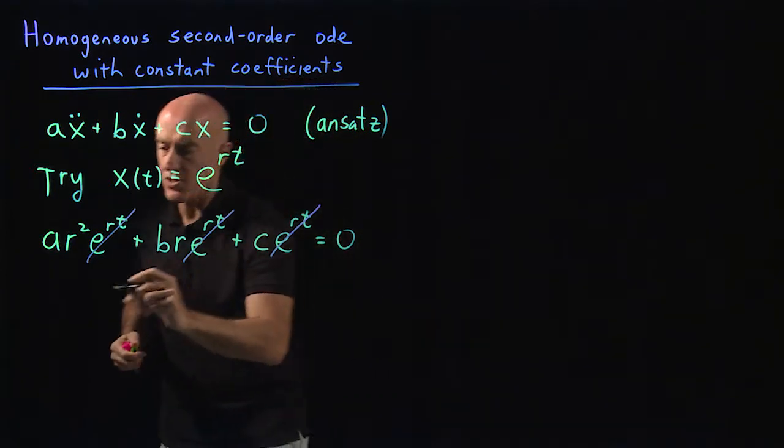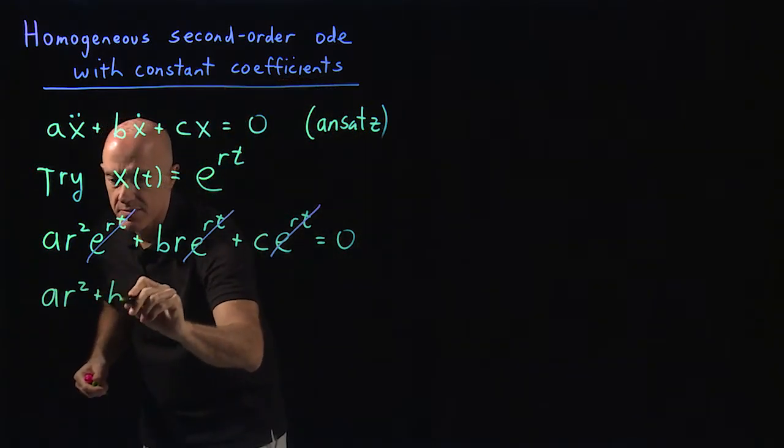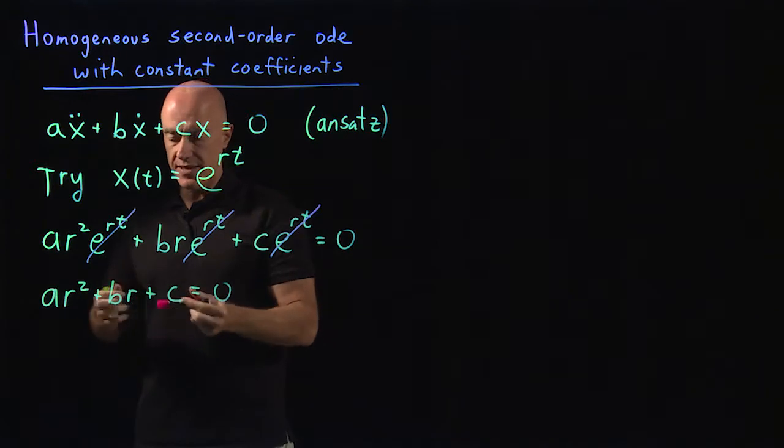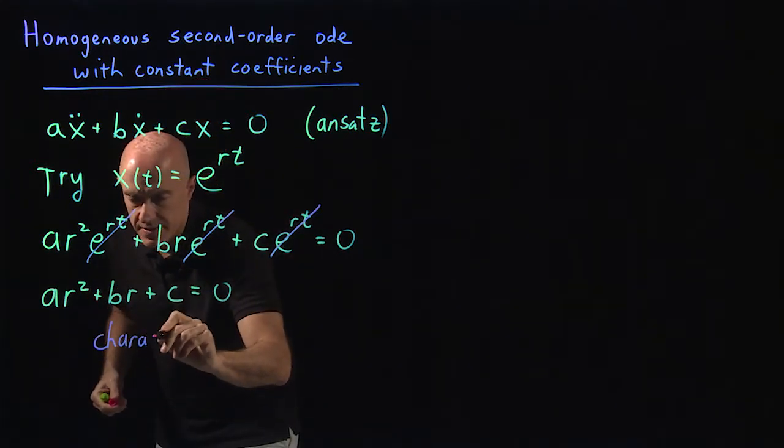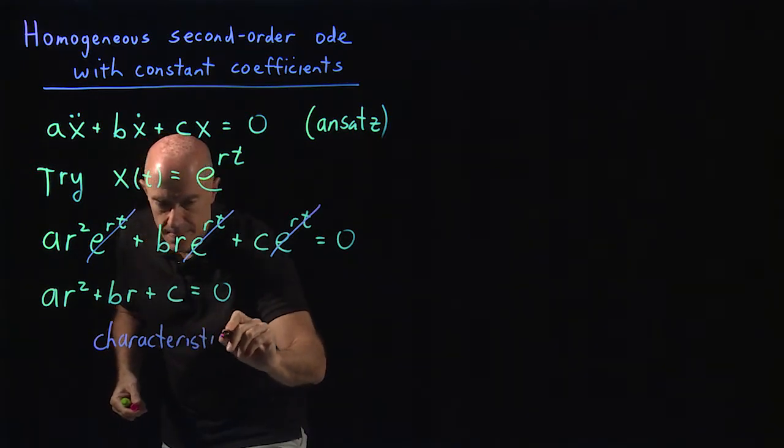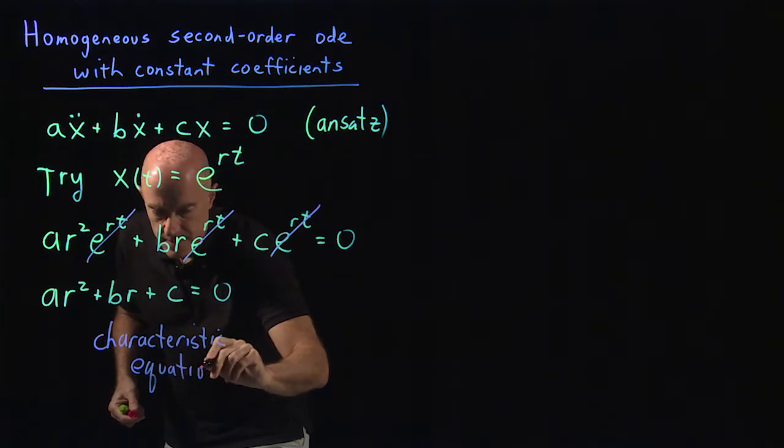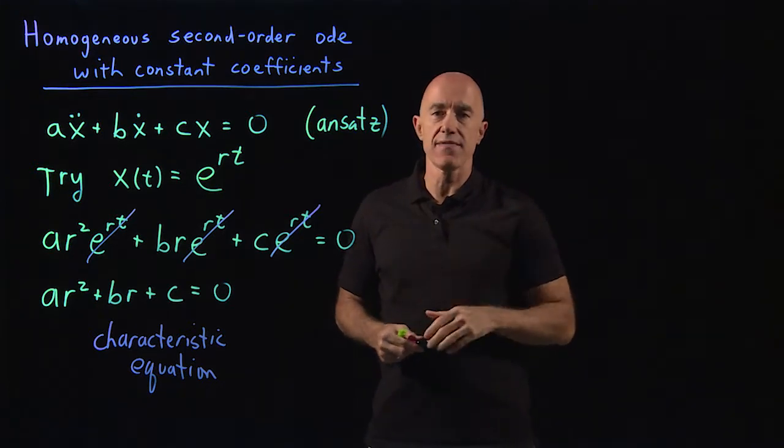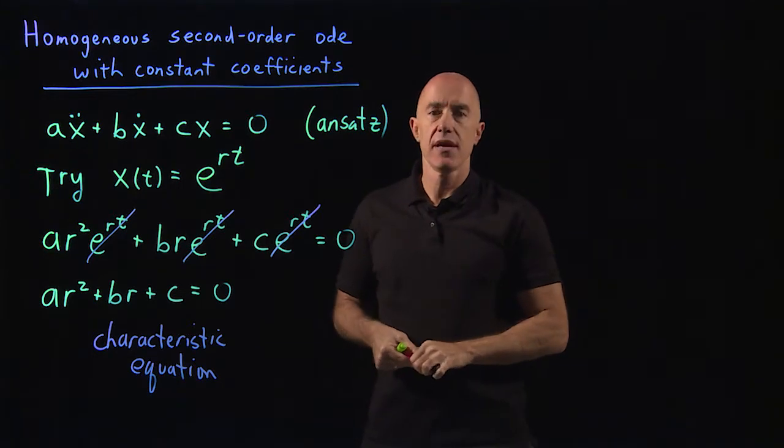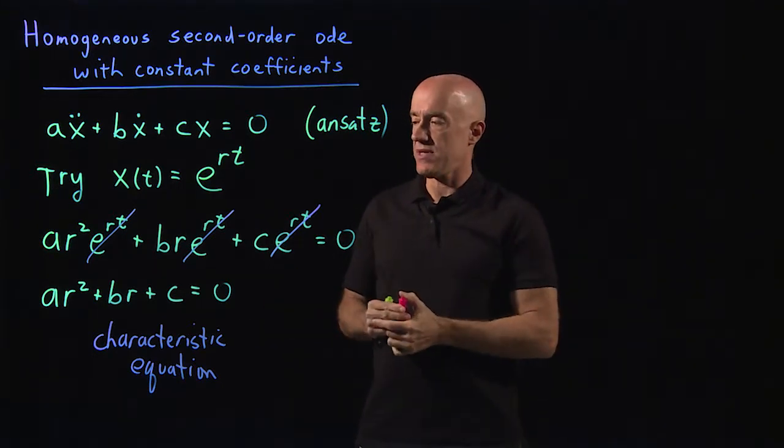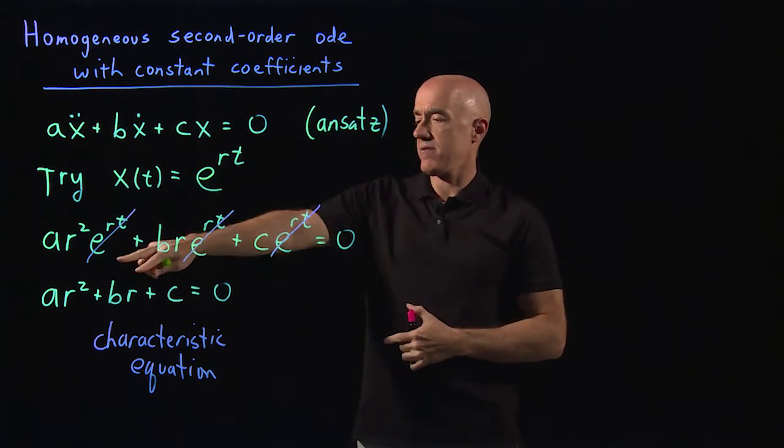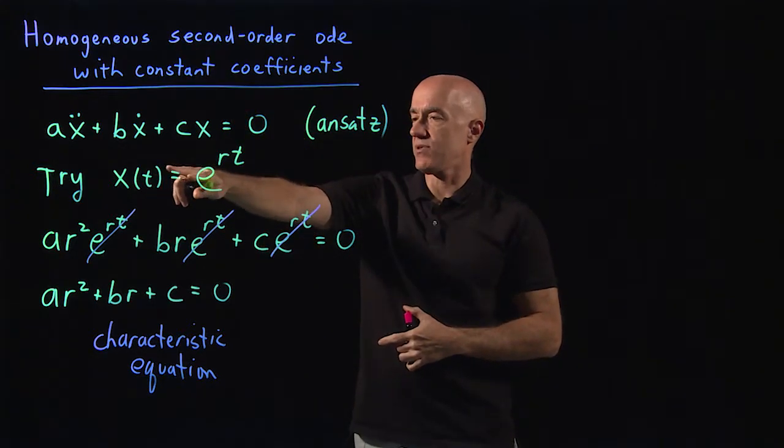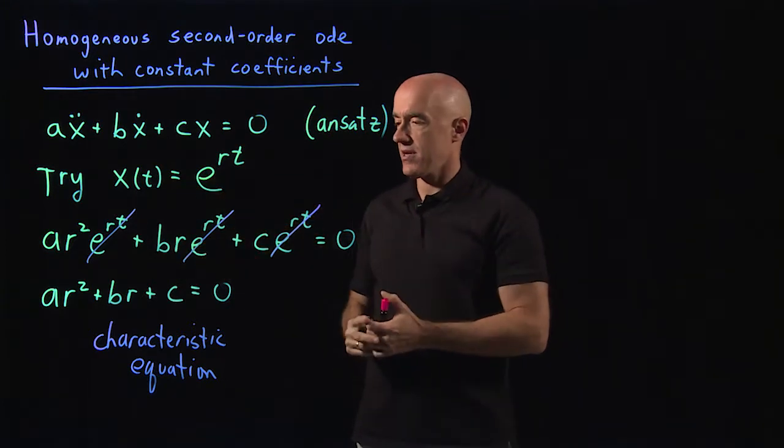And we end up with a quadratic equation for r: ar squared plus br plus c equals 0. This equation has a name, it's called the characteristic equation. If you know your matrix algebra, the equation for the eigenvalue is also called a characteristic equation. And in fact, there's a relationship between this and the eigenvalue problem. But here, we just know that this quadratic equation we get from the substitution x equals e to the rt is called the characteristic equation.